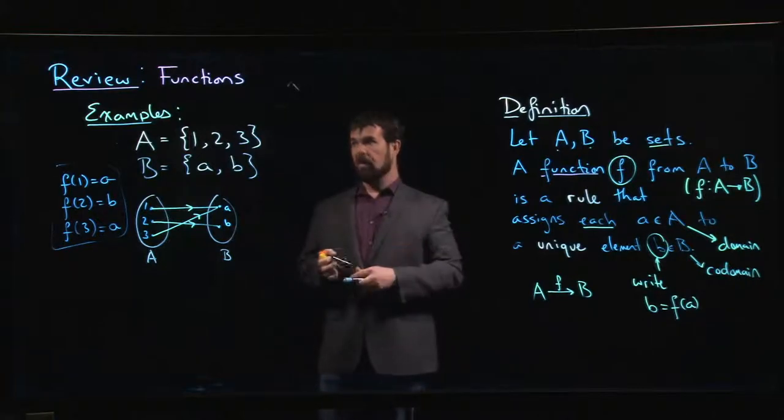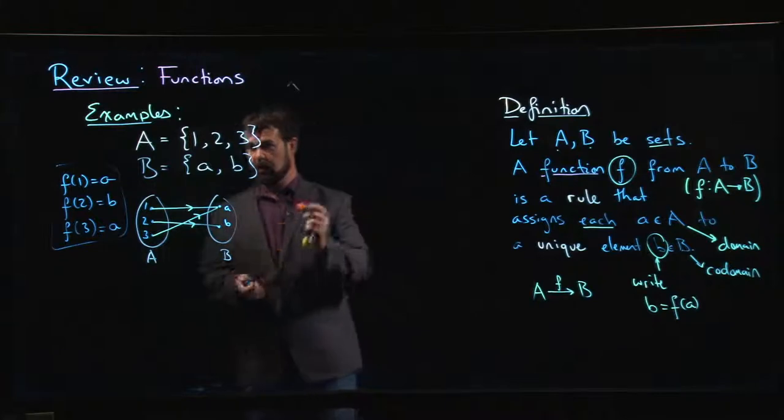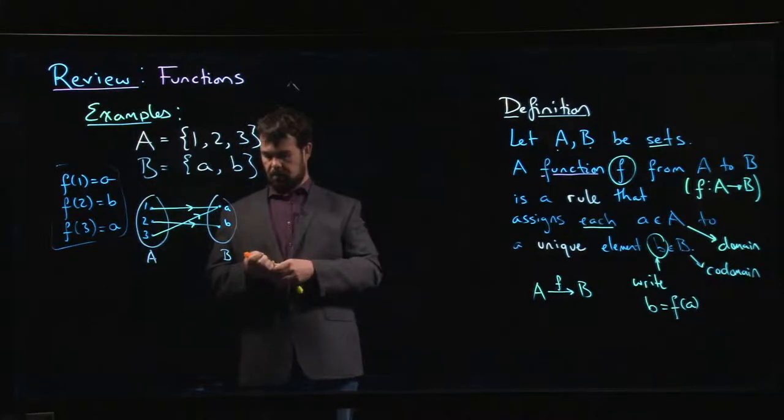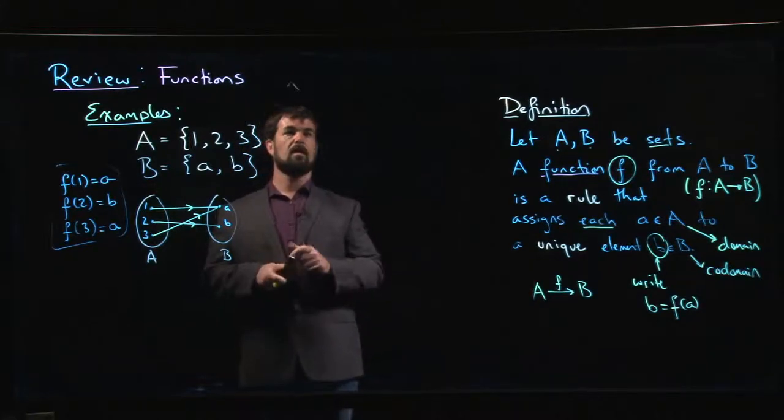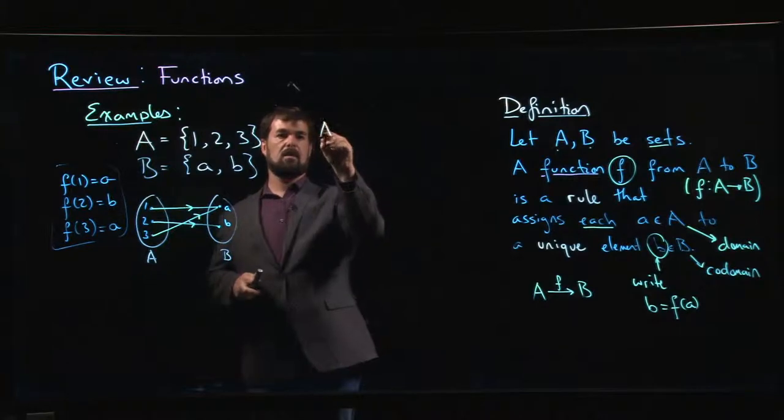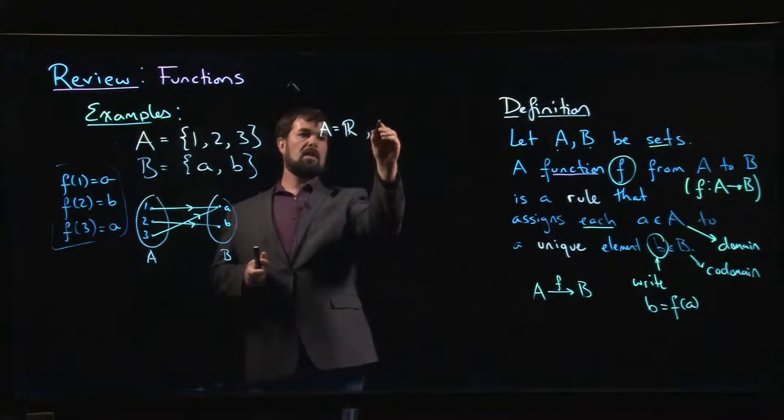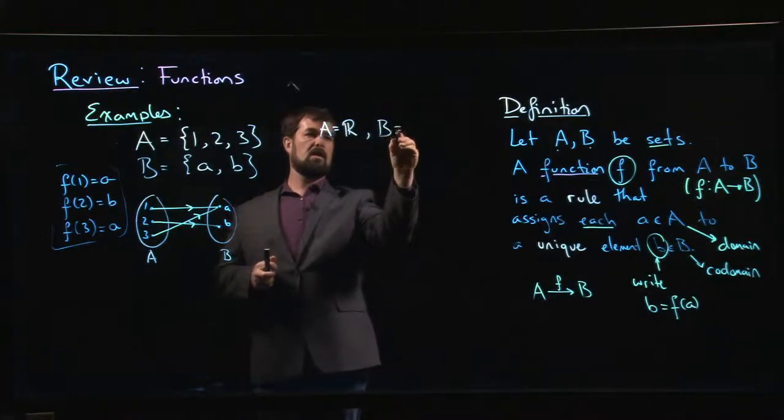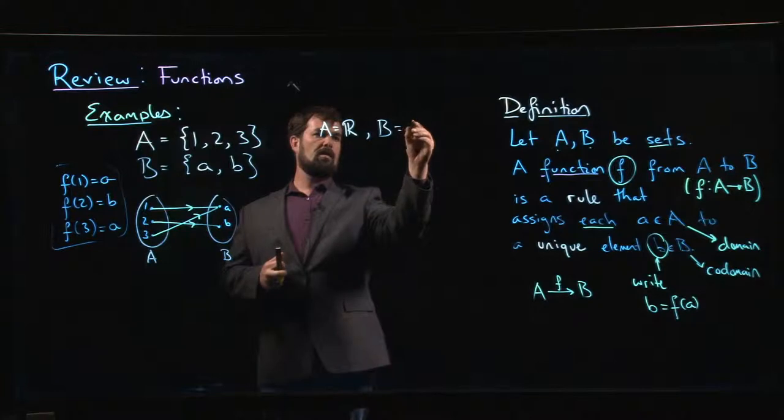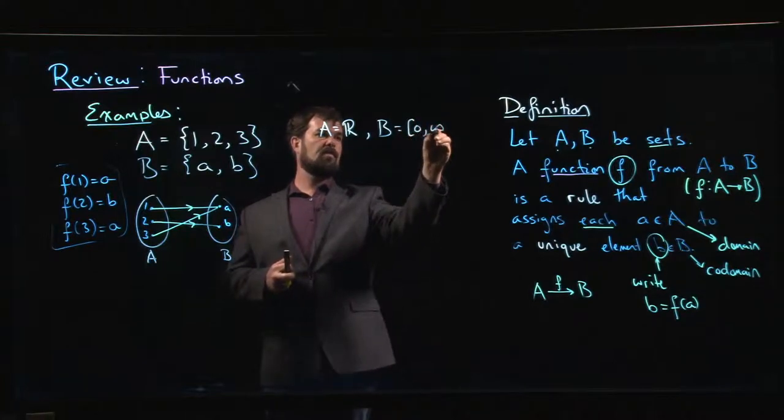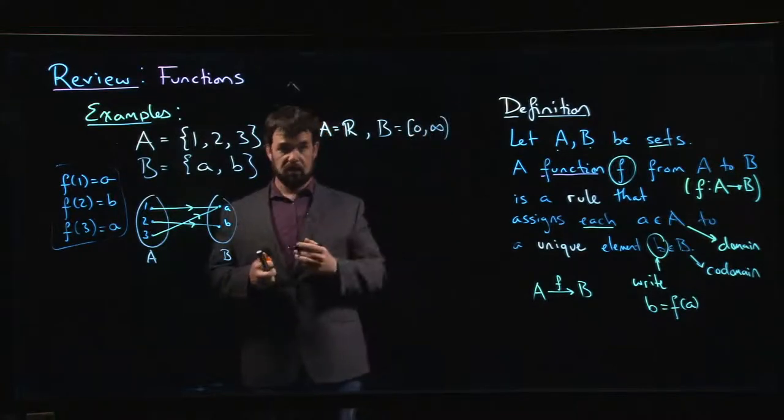Of course, a lot of the time we're dealing with examples where A is going to be the set of all real numbers. Maybe B is - let's say B is going to be the numbers from 0 to infinity, could be all real numbers.